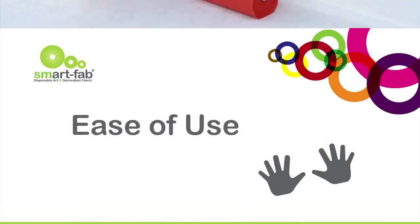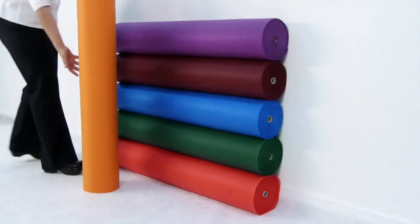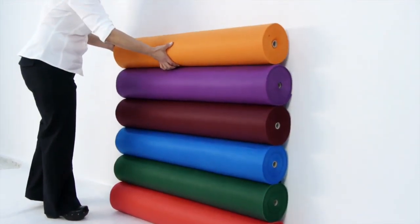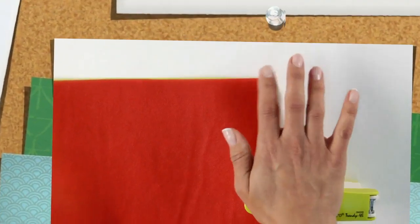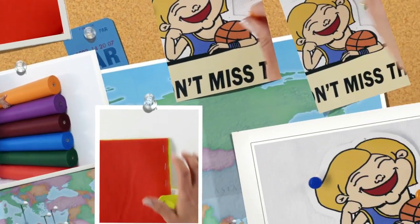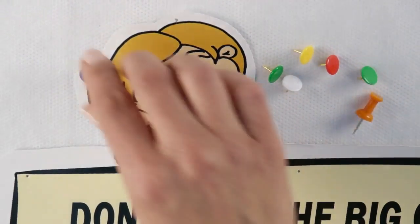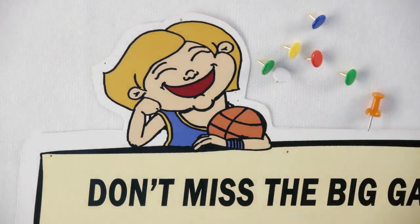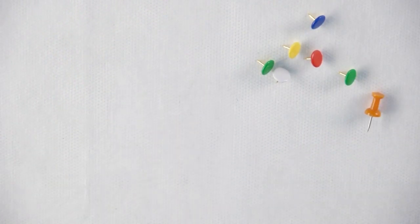Ease of use. SmartFab is a very lightweight fabric, so light that it's easy to lift an entire roll. You can attach pieces of SmartFab to one another with staples or thumbtacks. You can use pushpins to attach SmartFab to bulletin boards, and they won't leave holes when you remove them.